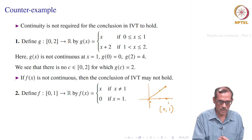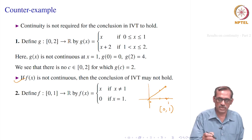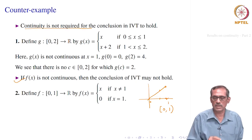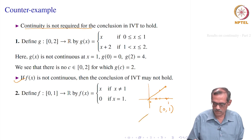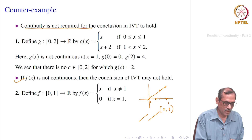The first example shows that if f(x) is not continuous, then the conclusion of IVT may not hold. The second example says that continuity is not required for the conclusion in IVT to hold. You can also give examples at an interior point where a function starts from one piece and another from another piece, including only one of the endpoints. There too, the conclusion of IVT will hold but the function is not continuous at that point.